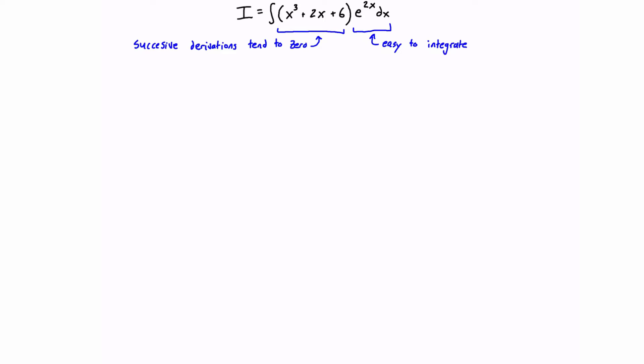So what we need to do is just write out each part down here. So we have x³ + 2x + 6. That's going to be on one side, and then we're going to have e^(2x) dx as our other part.